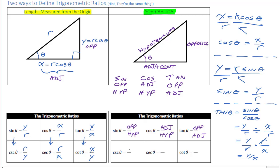What about our reciprocal functions? That is just flipping these: cosecant is hypotenuse over opposite, secant is hypotenuse over adjacent, and cotangent is adjacent over opposite. So it's either labeling them x, y, and r, or adjacent, opposite, and hypotenuse — it's really the same thing.